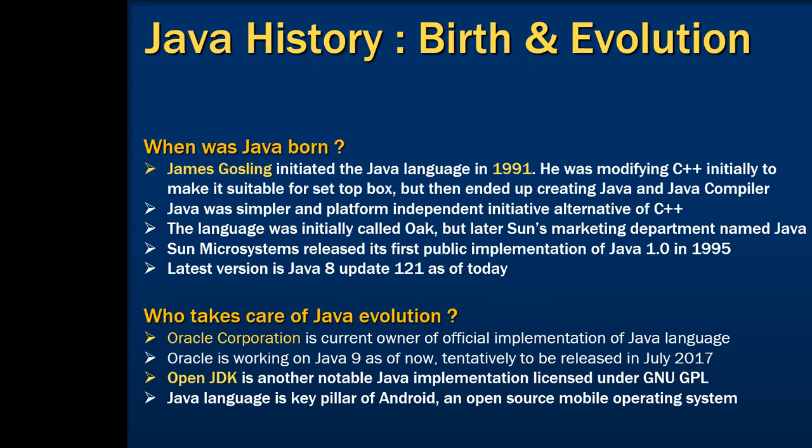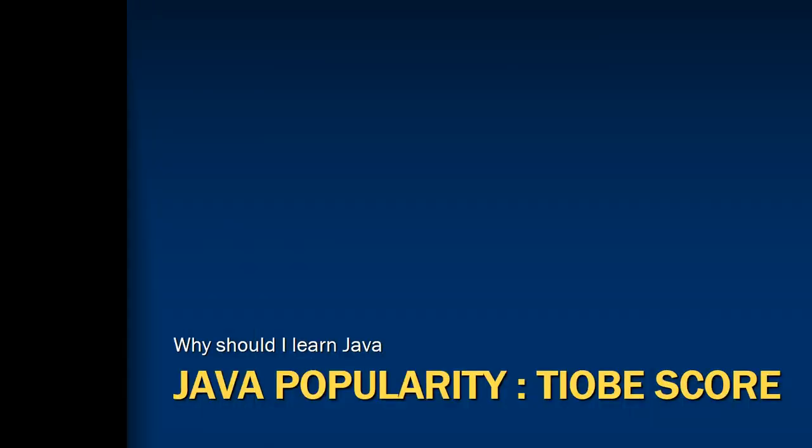OpenJDK is another notable Java implementation which is licensed under the GNU GPL license. Learning Java will also help you in creating Android applications, because Java is the key pillar of Android, which is an open source mobile operating system. Now, how popular is Java? In order to understand the popularity of Java, we can look at the TIOBE score. TIOBE is a software quality company that tracks the evolution and popularity of programming languages. And Java is number one in the market.